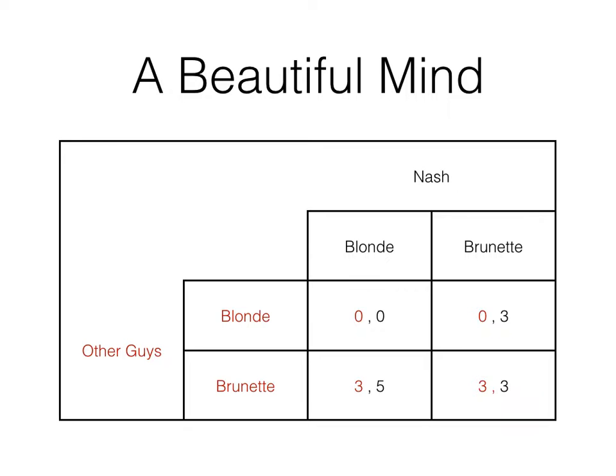They end up all going for the blonde. He reasons that if we go after the blonde and she rejects us, and we then go after the brunettes, they're also going to reject us. So our best strategy is not for all of us to go for the blonde. Our best strategy is for all of us to choose to go for a brunette, and if we all go for a brunette, we'll end up at three and three.